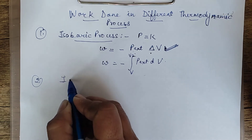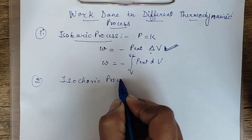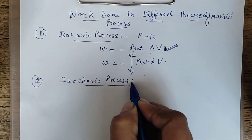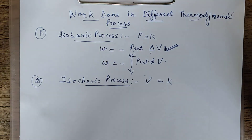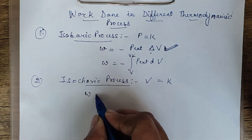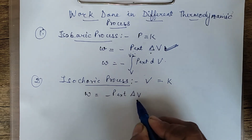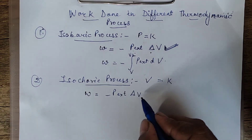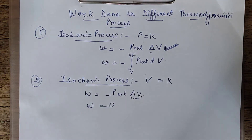Second is isochoric process. Isochoric process is that process carried out at constant volume — volume is kept constant and is not changing. Using the formula W = -P_external × ΔV, since ΔV = 0, this part is zero, so the work done in isochoric process will be zero.